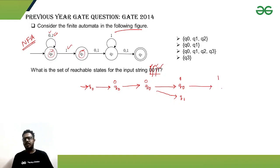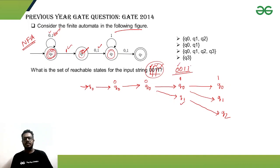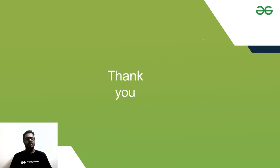On the last '1': from q0, we can either stay in q0 or go to q1; from q1, getting '1' leads only to q2. So after scanning the full string '0011', we can reach states q0, q1, and q2. Option A is the correct answer: the set of reachable states is {q0, q1, q2}. If you have any questions, please put them in the comment section — thank you.